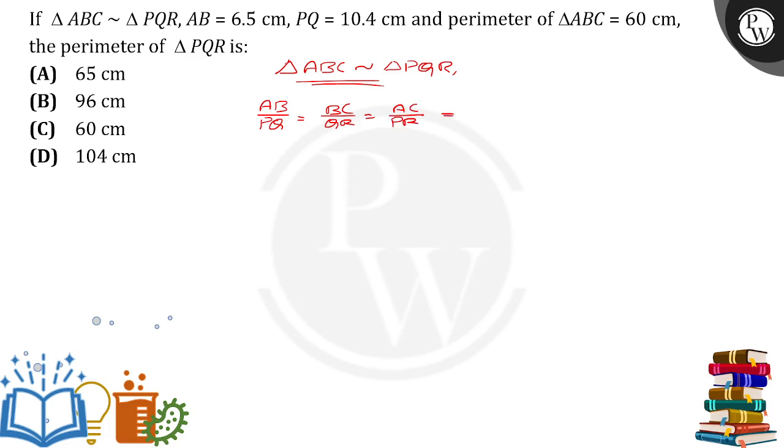Their ratio is also equal to the ratio of their perimeter, that means perimeter of triangle ABC divided by perimeter of triangle PQR.